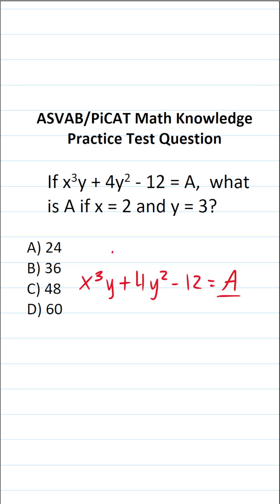In this case, we want to know the value of A when x equals 2 and y equals 3. So the first thing I'm going to do is plug in 2 for x and 3 for y respectively. This becomes 2 to the third power times 3 plus 4 times 3 squared minus 12 equals A.